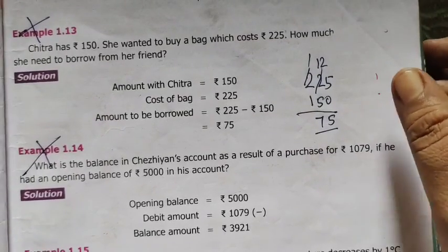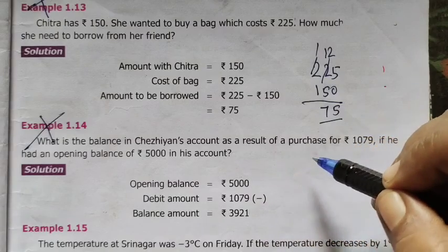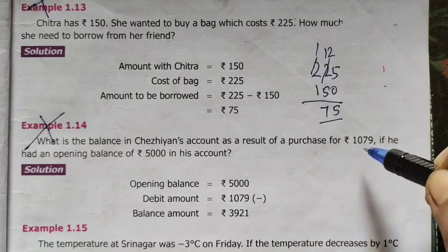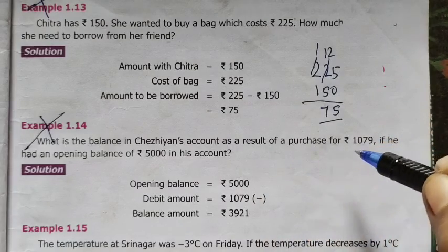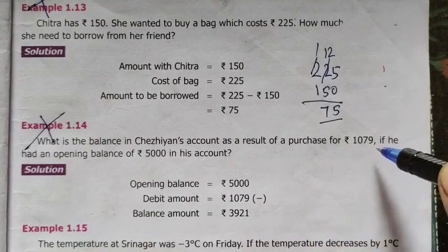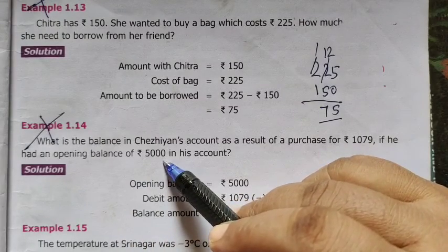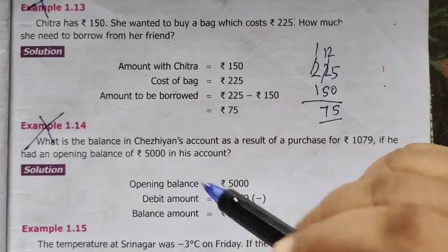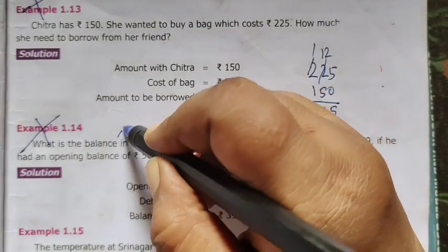Example 1.14. What is the balance of Chezhiyan's account as a result of a purchase of Rs 1079? Chezhiyan purchased something for Rs 1079. In the beginning opening balance is 5000. Now, what is the balance now? If he has a question left, they are asking the balance.